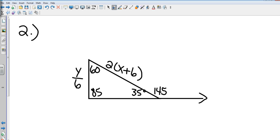Now we know which side is greater than the other side. So here's your inequality: 2 times (x + 6) is greater than y over 6.